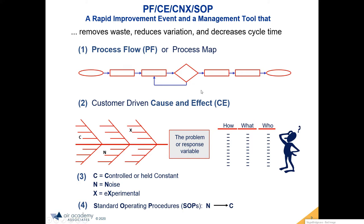The process flow diagram is a very easy tool to use. We'll show you in SPC Excel where you can gain access to the process flow tools. The second tool is the cause and effect diagram, also known as a fishbone diagram or an Ishikawa diagram. We call it customer-driven because we always want to know who the customer is, what the customer needs or wants, and how we get that. In a cause and effect diagram, we indicate the head of the fish as the problem or the response variable, and in the backbone of the fish we enter the variables or factors — the potential causes of the response variable.